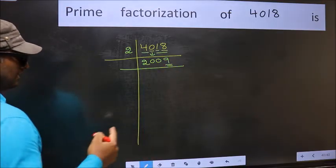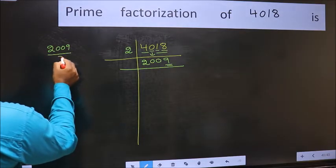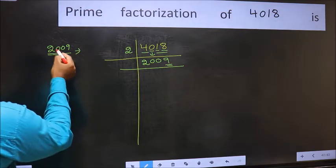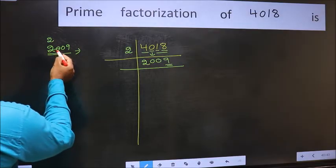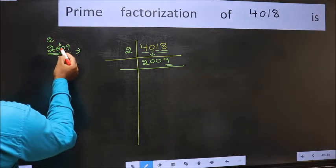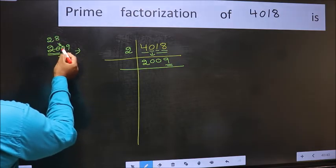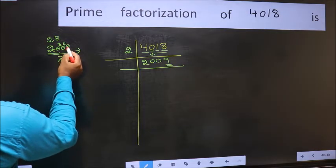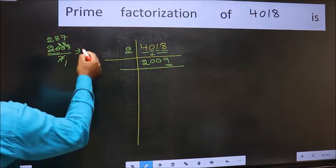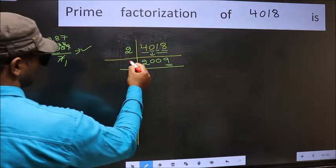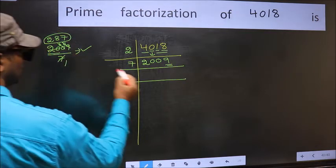Next, prime number 7. Let us check divisibility by 7. A number close to 20 in 7 table is 7 times 2 is 14. 20 minus 14 is 6, carried forward 60. Close to 60 is 7 times 8 is 56. 60 minus 56 is 4, carried forward 49. 7 times 7 is 49. No number left out, so this is divisible by 7. We write the result: 287.